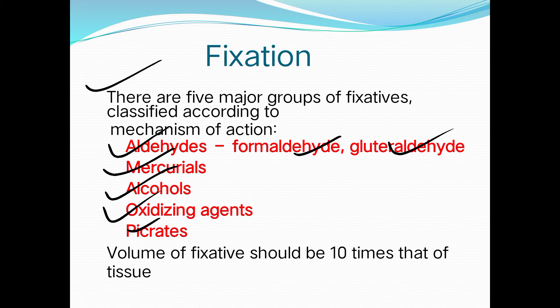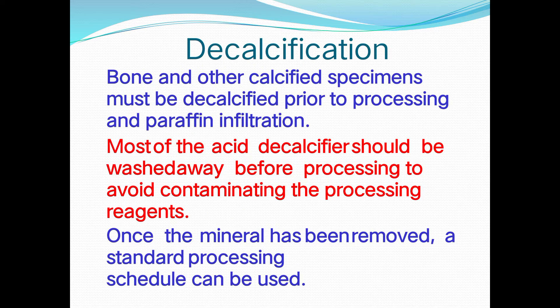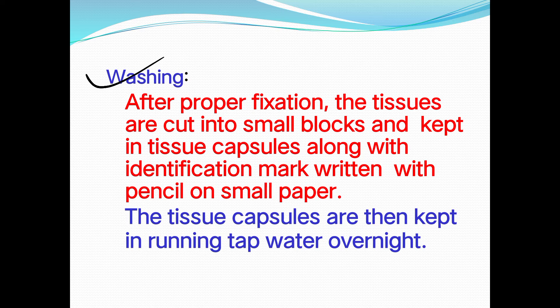There are five major groups of fixatives classified by mechanism of action: aldehydes (formaldehyde, glutaraldehyde), mercurials, alcohols, and oxidizing agents. The volume of fixative should be 10 times that of the tissue. Bone and other calcified specimens must be decalcified prior to processing and paraffin infiltration; acid decalcifiers should be washed away before processing.